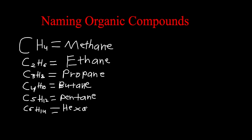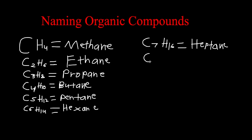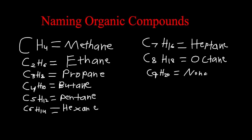Like hexagon having six sides, so it's easy to remember. If we have seven carbons, we would have a total of 16 hydrogens — this would be called heptane. If we have eight carbons, we would have a total of 18 hydrogens — this would be called octane. If we have nine carbons, this would be called nonane, and if we have ten carbons, this would be called decane.